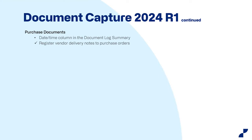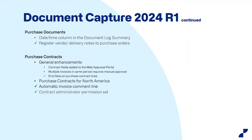For purchase documents: the datetime column has been added to the log summary. You can also look forward to delivery note registration for the purchase order category. Purchase contracts got a number of additions and changes. General enhancements for the portal, an end date has been added, and North America is now also supported by purchase contracts. There is also an administrator permission set added, and variable invoice amount distribution — a new way of registering invoices to make it faster and better.